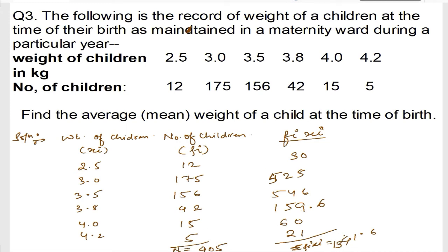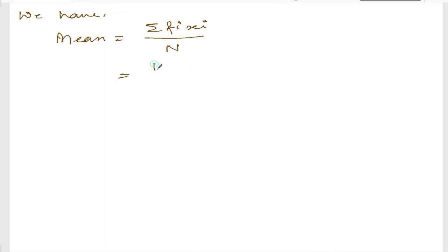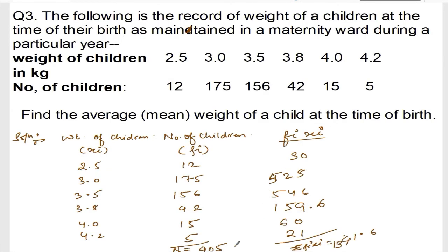Okay. This is called N. I hope you can see. So, let me write down here. We have mean. Formula of mean is equal to summation of FI XI divided by N. FI XI, we have found out here. That is 1341.6. So, let me write down here. 1341.6 divided by N. N we got as 405. So, write down 405.